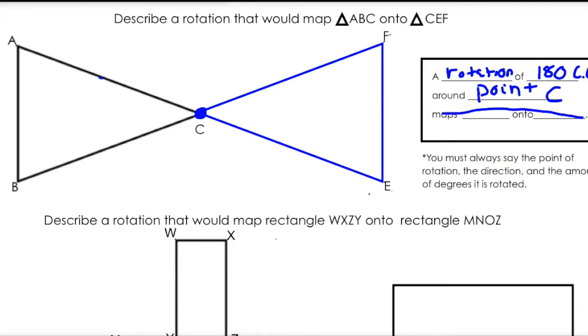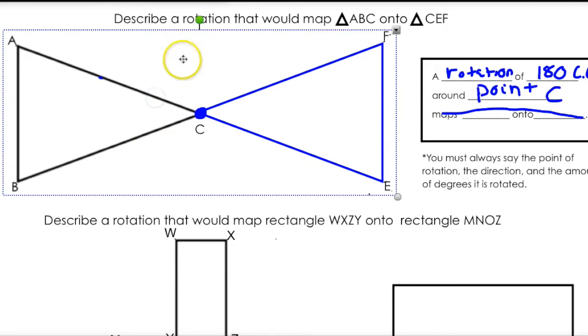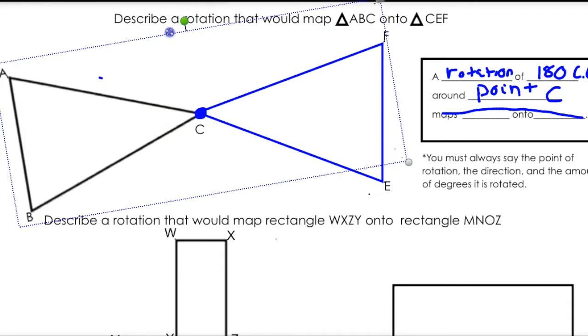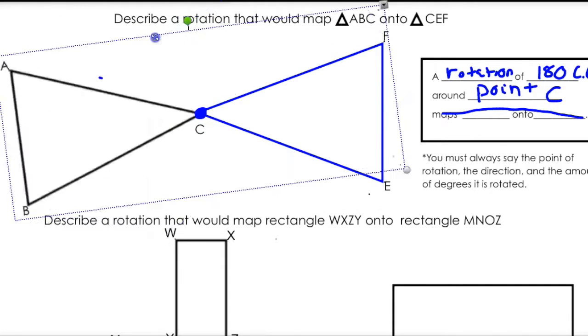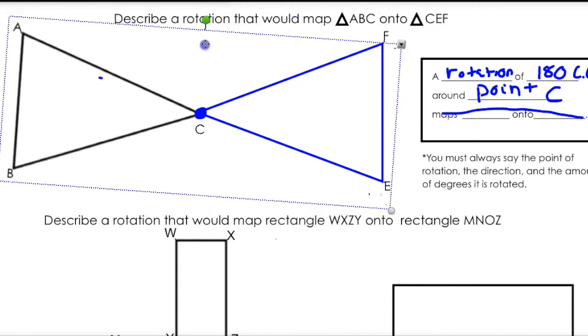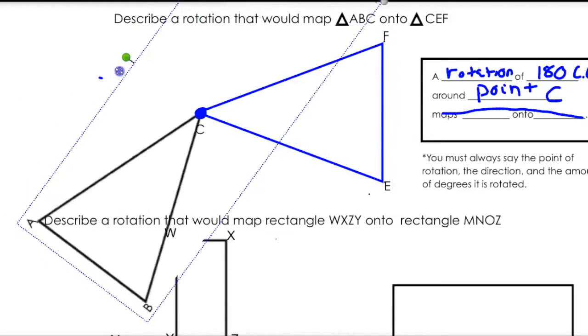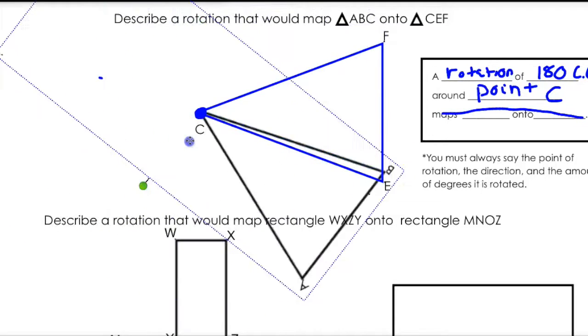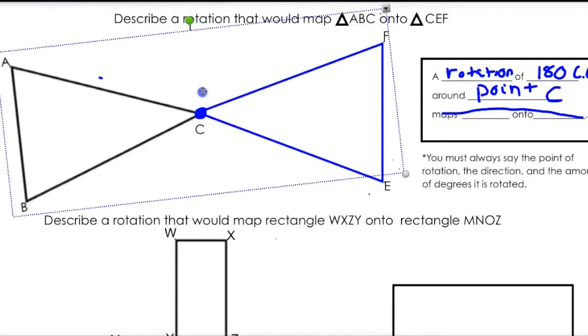Remember, there are two things to be concerned with: one, the center of rotation — which is clearly C here, that's where you're pivoting — and two, how much you are going to turn it.